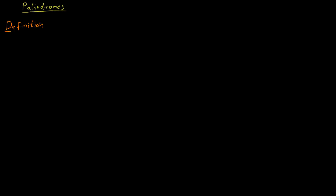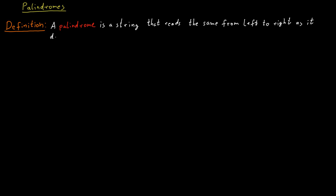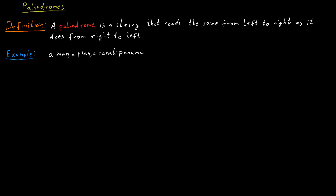A palindrome is a string that reads the same from left to right as it does from right to left. For example, if we ignore spaces and punctuation, then 'a man, a plan, a canal, Panama' is a palindrome. It reads the same from left to right as it does from right to left — the sequence of characters is exactly the same.